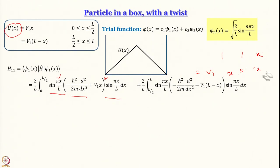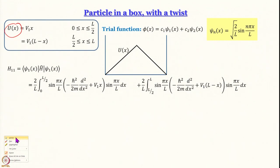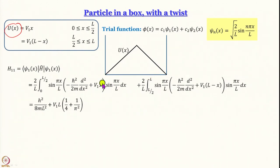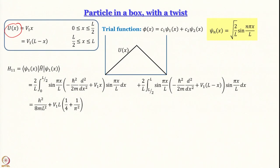Performing similar treatment on the second range integral and combining all terms, the final result for h₁₁ is h²/8mL² + V₁L(1/4 + 1/π²). The first term is the unperturbed particle-in-a-box energy ε₁, and the second term is the correction due to the triangular potential.